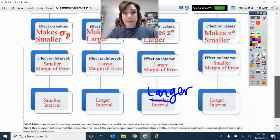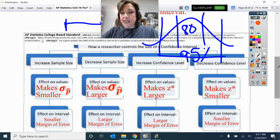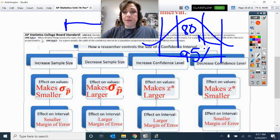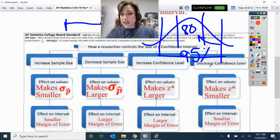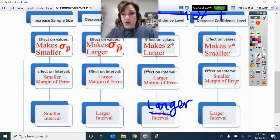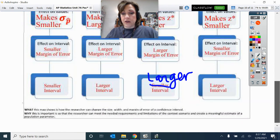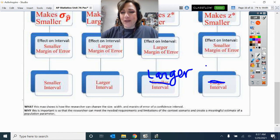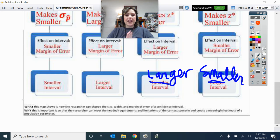And then the opposite. Decrease the confidence level. So go to 80% confidence. Then we have a smaller critical value, smaller margin of error, smaller interval. I'll go fix those on my answer key. So there's the summary of what things change.